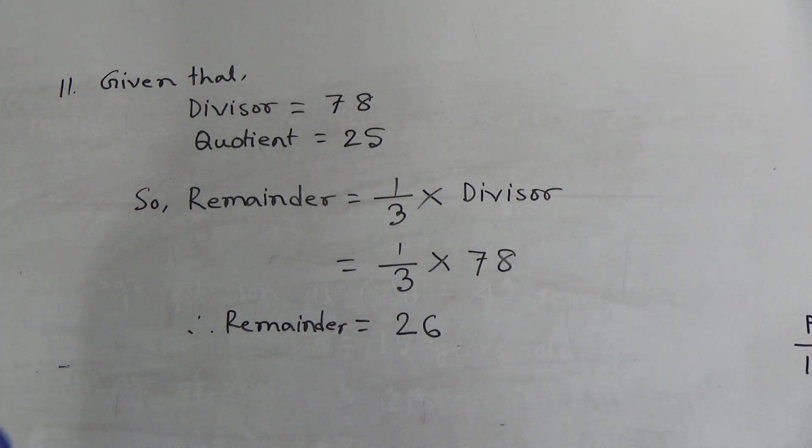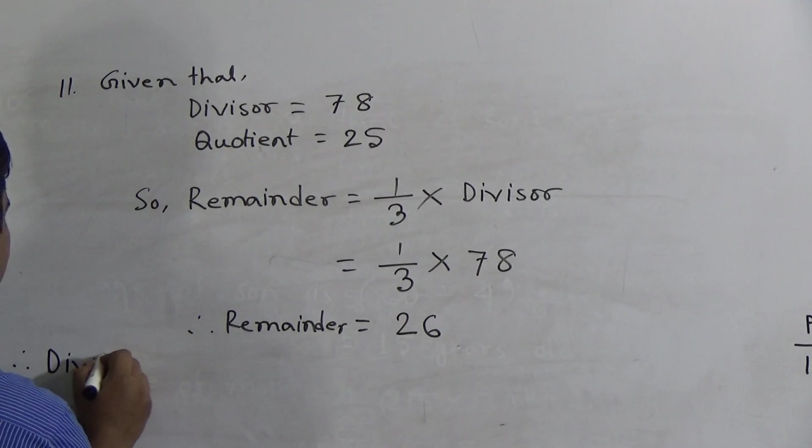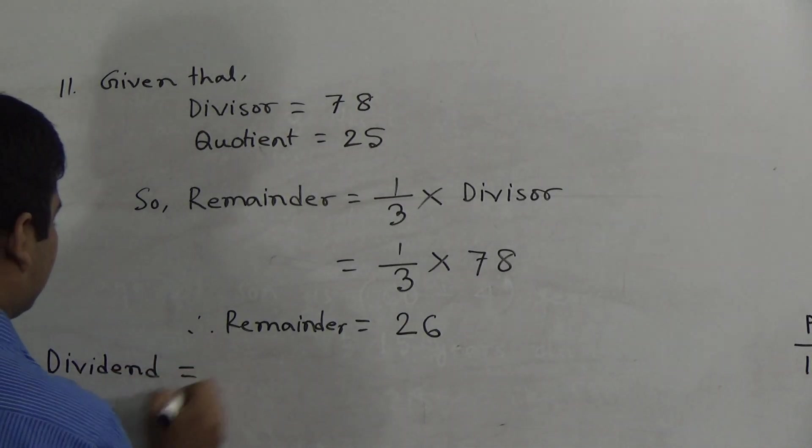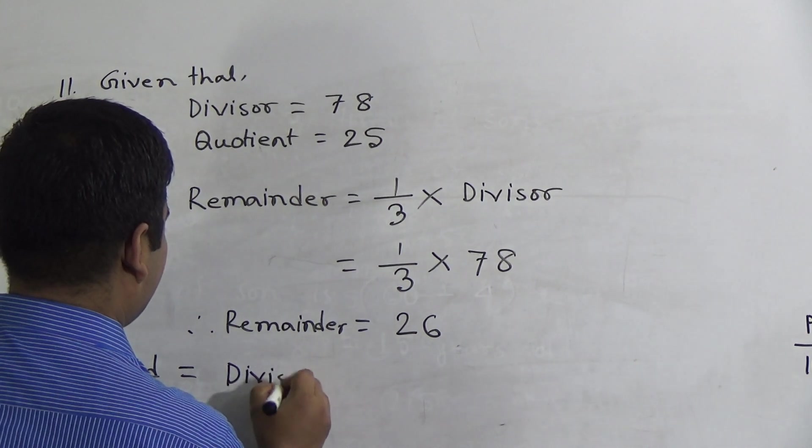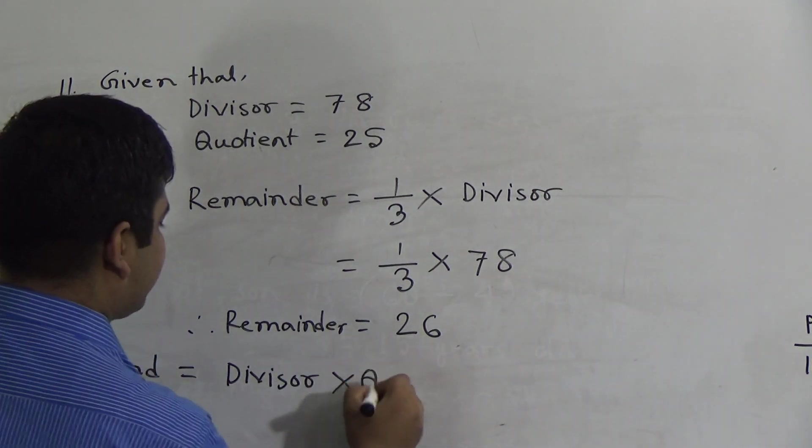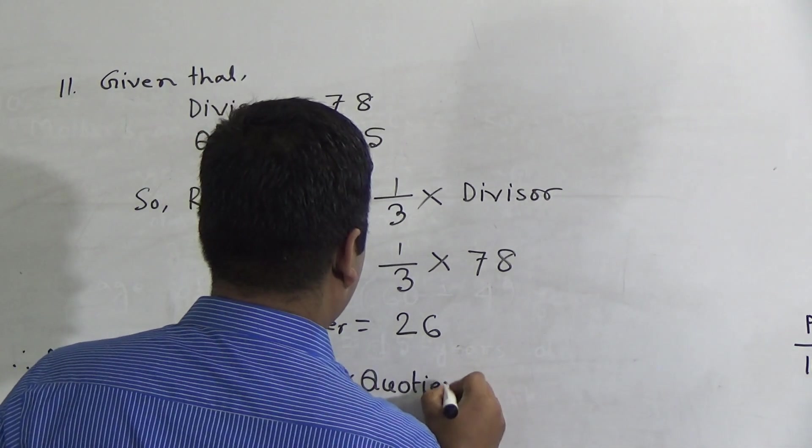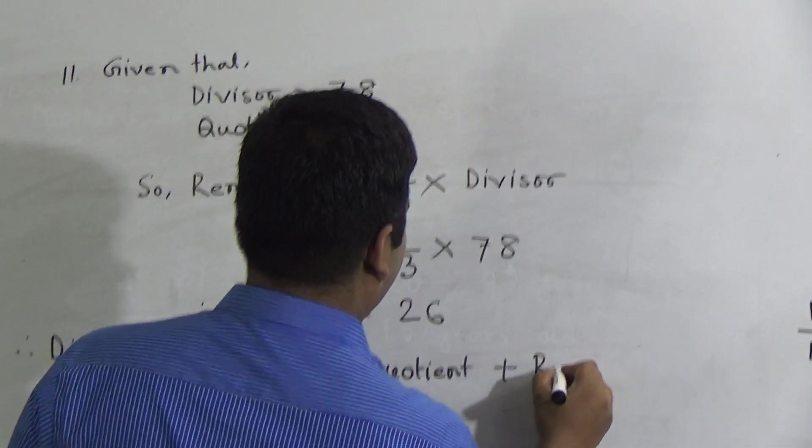Now we need to find out the dividend. Do you know the formula of dividend? Dividend equal to divisor multiply quotient plus remainder. So we write, dividend equal to divisor multiply quotient plus reminder.